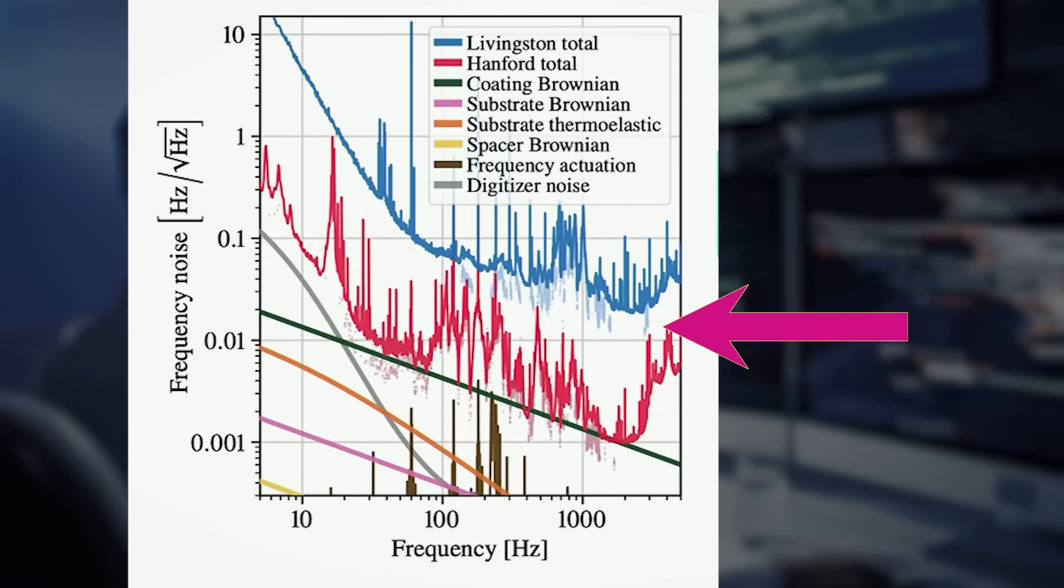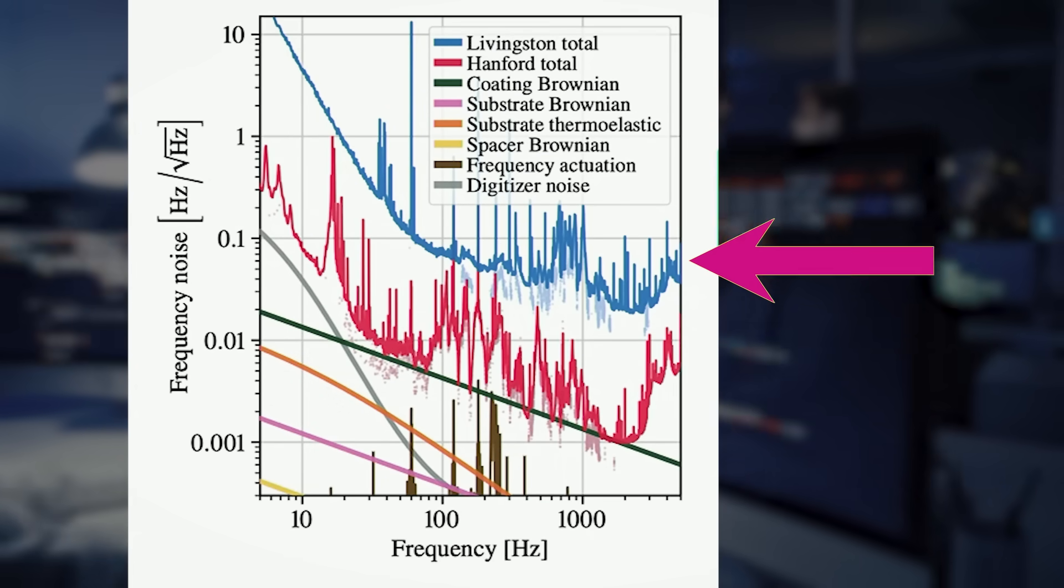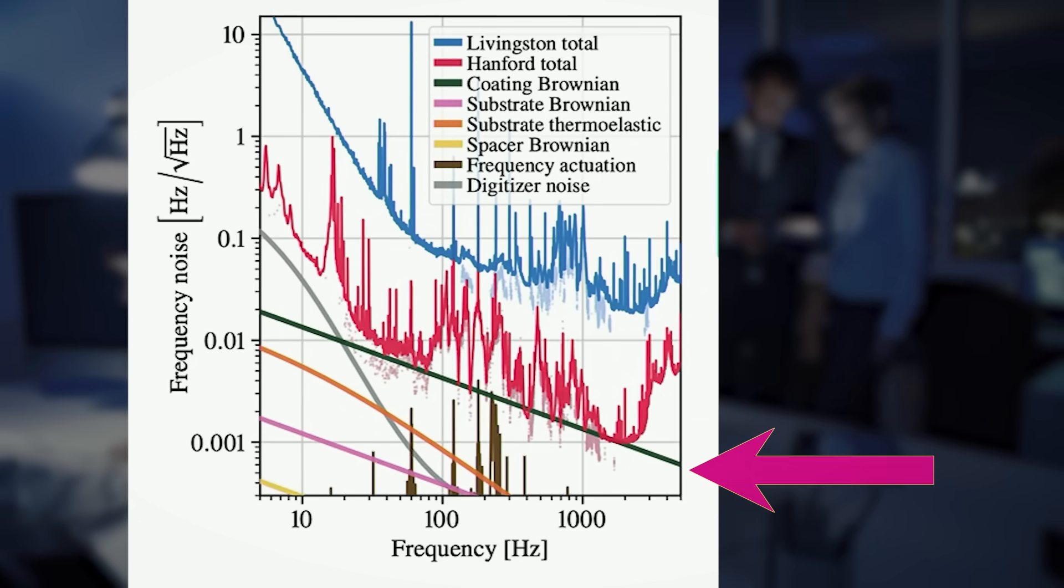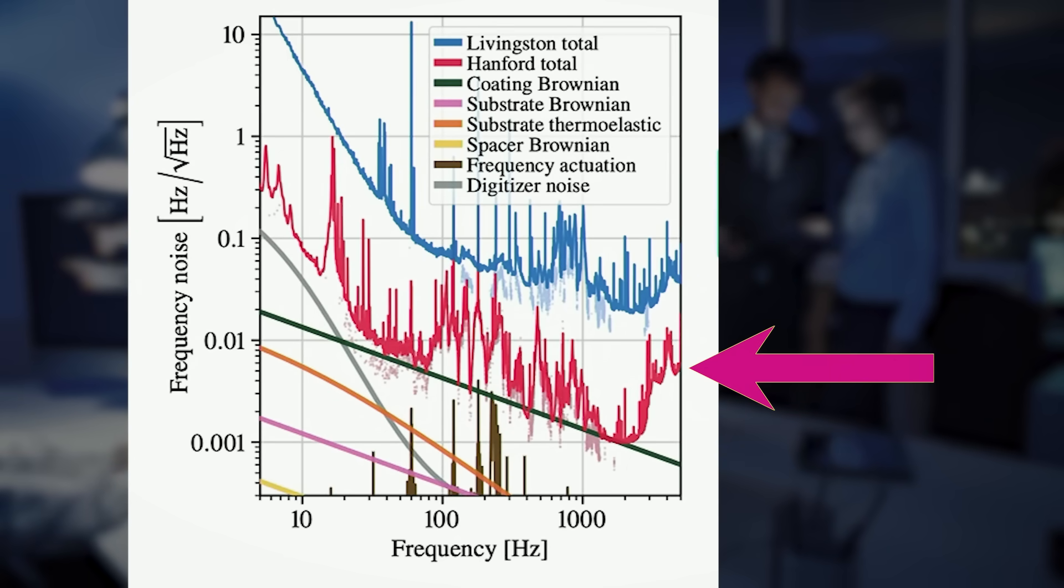And again, what they're looking for is to scan over these different frequency terms and see if it's possible for them to discern and pick out of this forest of lines that comprise the noise background to see a modulated in time signal consistent with a dark matter candidate.